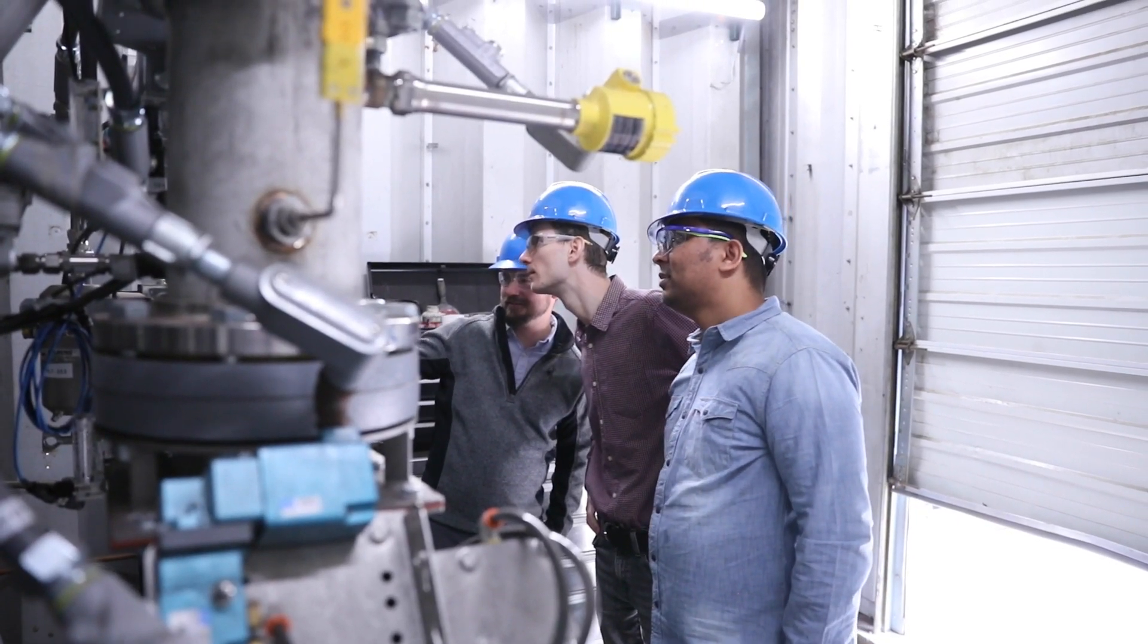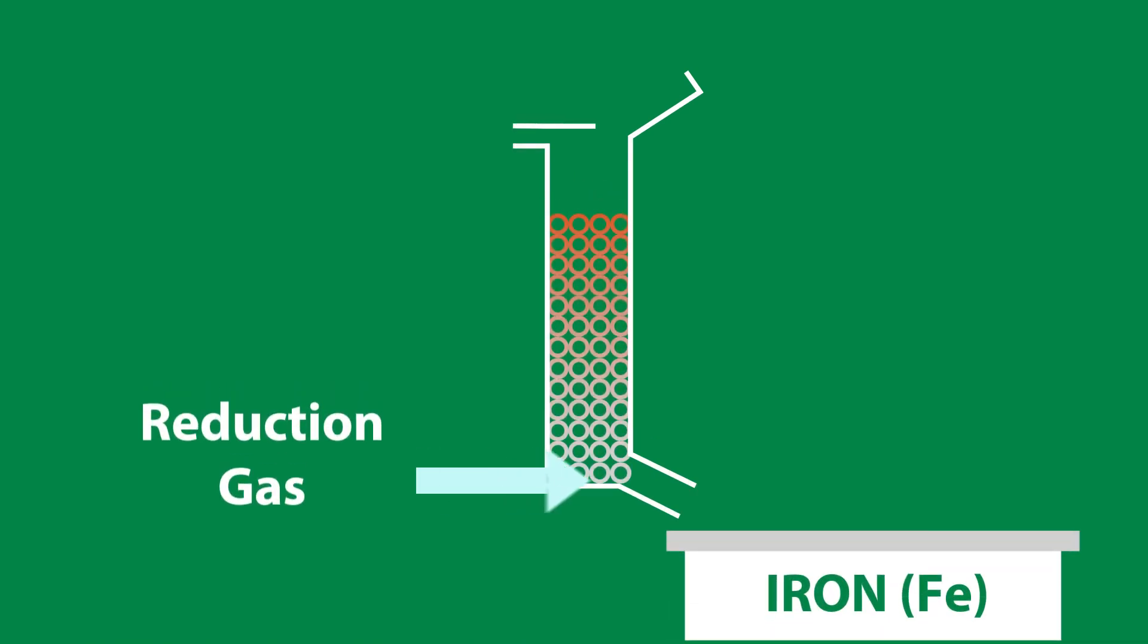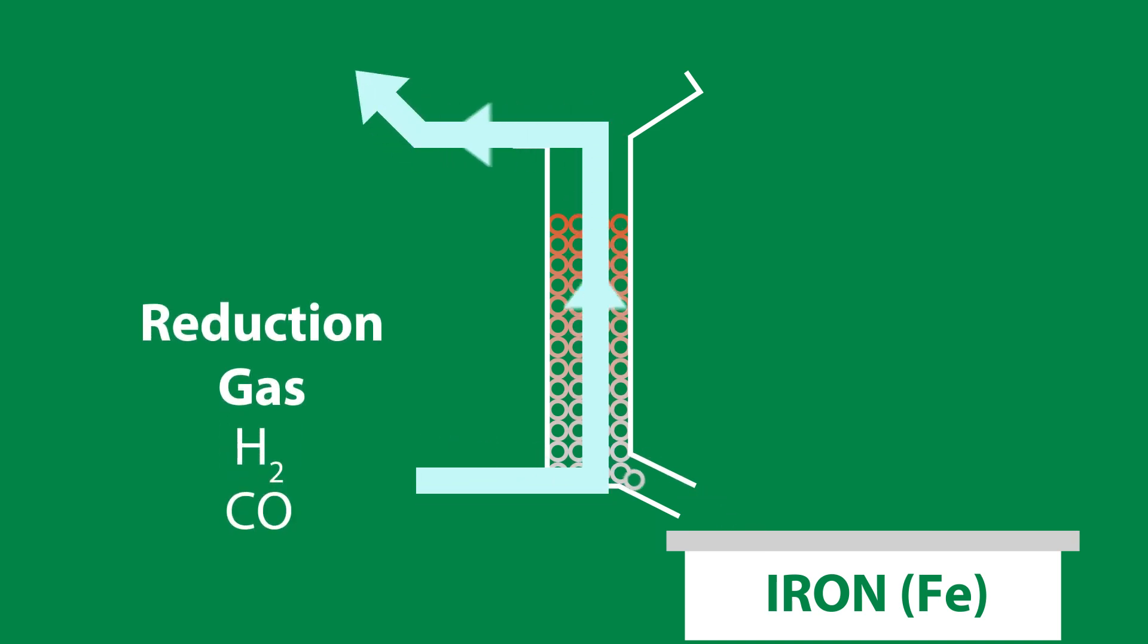Imagine that you got iron ore from the mining process. We take these pellets and feed them from the top of our reactor so that the pellets are flowing from top to bottom. The gas goes from the bottom to the top, and we have reducing agents, mainly carbon monoxide and hydrogen.